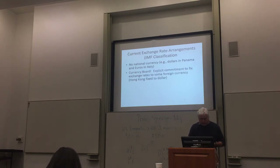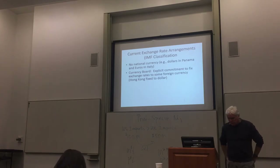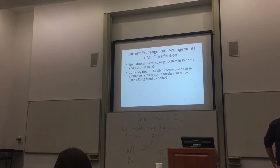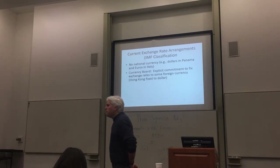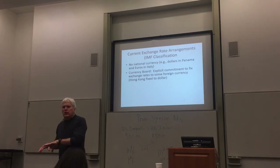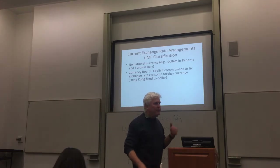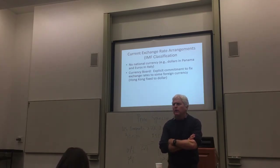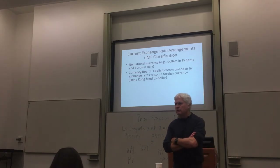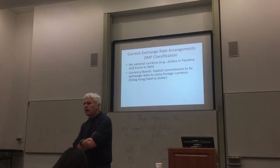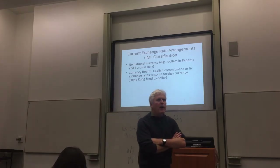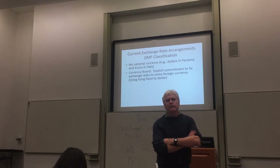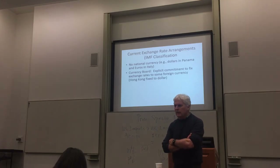The next step on the IMF ladder is countries with a currency board — a country where the exchange rate is fixed by some impartial, non-politicized institution within the country. The clearest example is Hong Kong. Hong Kong is a hugely important financial center, and it has a currency board arrangement where the Hong Kong dollar trades at 7.75 to the U.S. dollar — a fixed exchange rate, end of discussion.